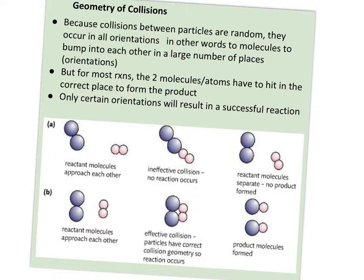So what is the geometry of the collisions? Well, collisions between particles are random, but they have to occur in the correct orientation. Over time, they bump into each other in a large number of places. But for most reactions, they have to hit in the right place to break the bond so the new bond can form.